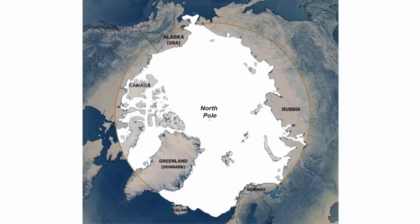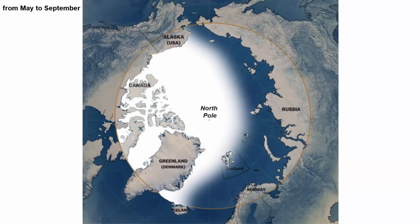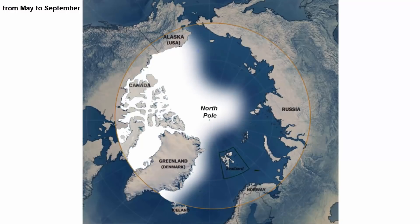Now that you know what sea ice is, what you need to understand is that the Arctic water is frozen all throughout the year. But the extent of the sea ice varies from month to month. For example, from the month of May till September, the ice extent of the Arctic water is low, because the northern hemisphere witnesses summer season during these months.